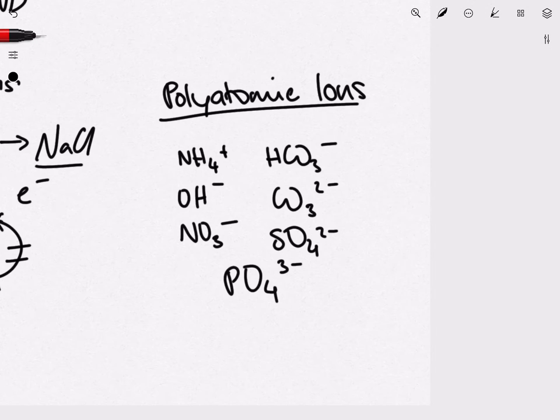Now let's take a look at polyatomic ions. You will have to know these both by name and formula. Here we have ammonium, hydroxide, nitrate, hydrogen carbonate, carbonate, sulfate, and finally phosphate.